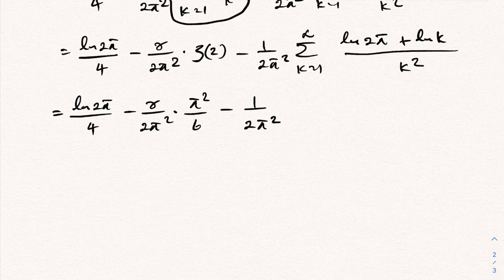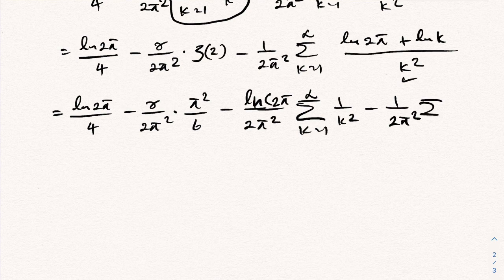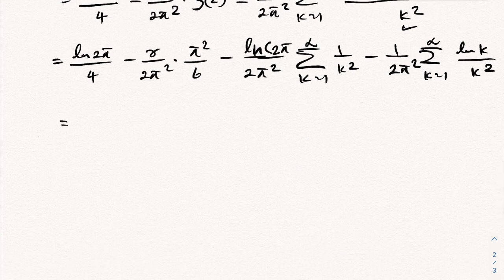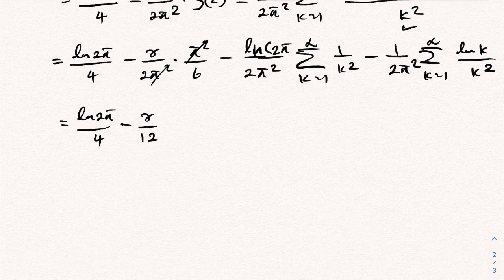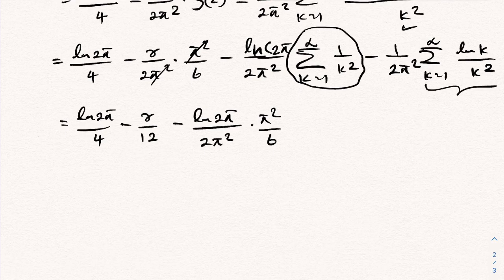Splitting the sums and substituting ζ(2) = π²/6, the π² terms cancel. We get ln(2π)/4 − γ/12 − ln(2π)/12 minus 1/(2π²) times the sum Σ(ln(k)/k²). This last sum is a well-known result connected to the derivative of the Riemann zeta function.